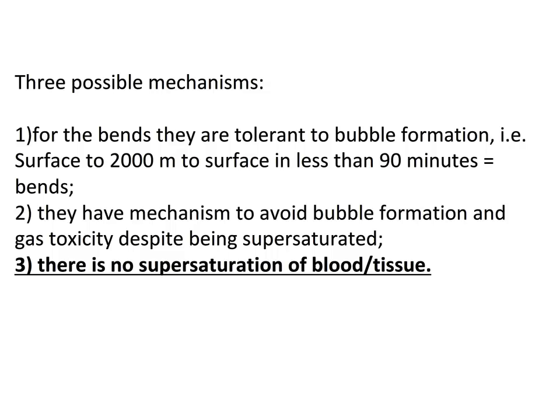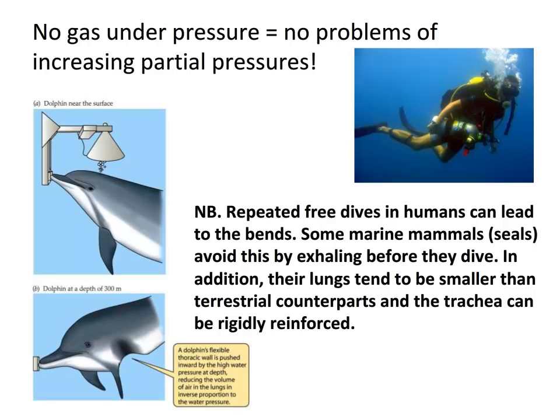There are three possible explanations: they could be tolerant to bubble formation; they could have mechanisms to avoid bubble formation and gas toxicity even when supersaturated; or, using the rule of parsimony, their blood and tissue simply never become supersaturated. That last explanation is correct — and the reason is obvious: they are not breathing gas under pressure.